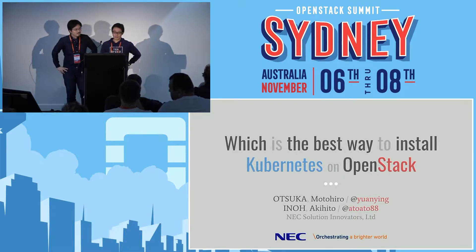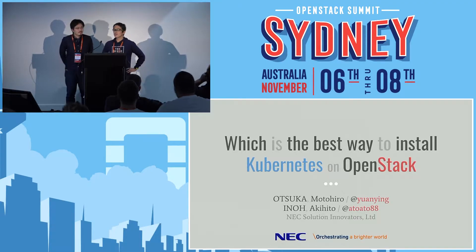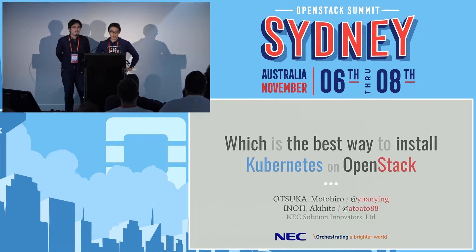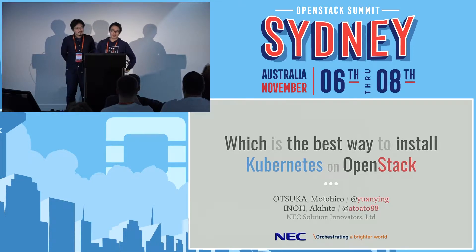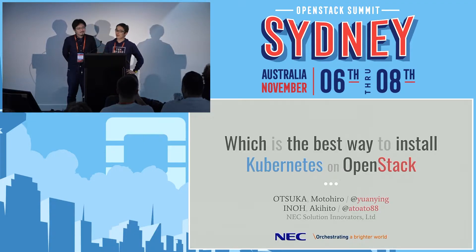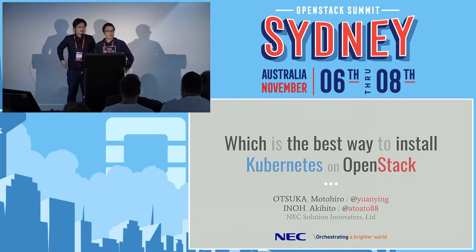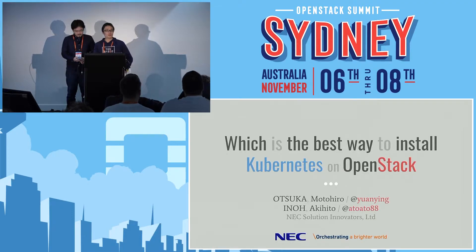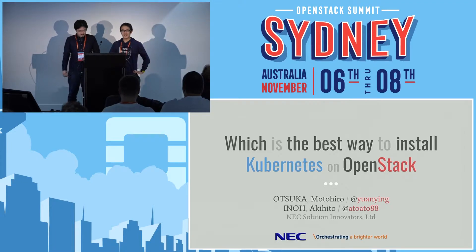Okay, so let's get started. I'm Otsuka Motohiro. I was the core developer of the OpenStack Magnum project, which is known as Kubernetes as a service on OpenStack. So I have some skill set to deploy Kubernetes.